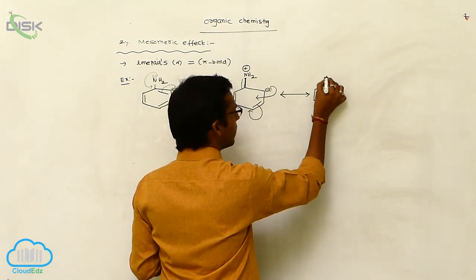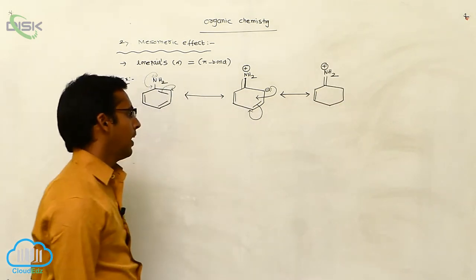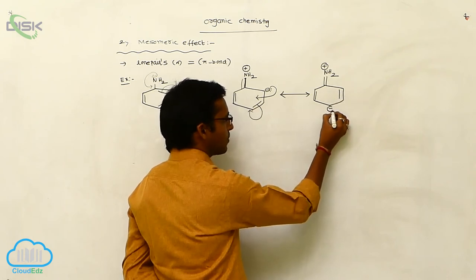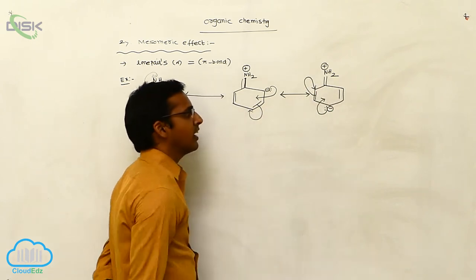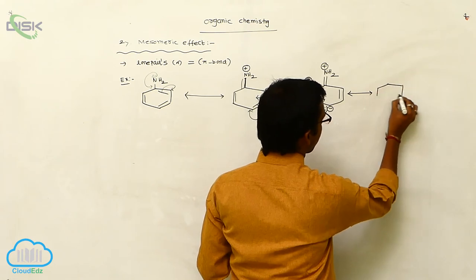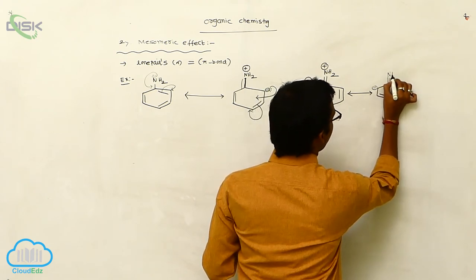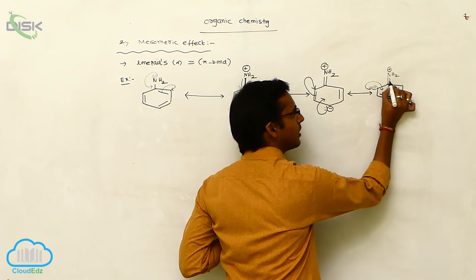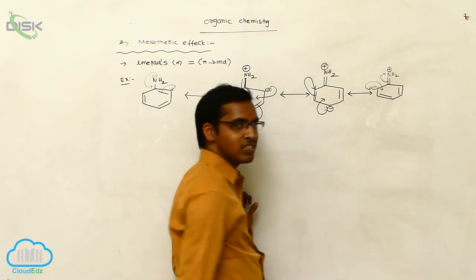This pi bond is not participating in the reaction. Nitrogen is getting a positive charge. The excess electrons shift to the inner side, giving another pi bond and a negative charge. The lone pairs shift to the inner side, and this pi bond shifts further. Nitrogen carries a positive charge, and the excess electrons shift so that this pi bond shifts towards nitrogen. The negative and positive charges are neutralized.